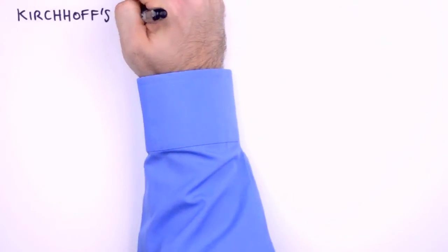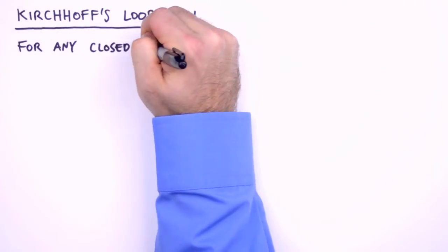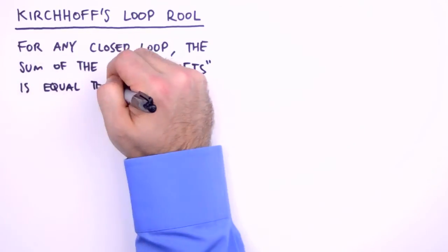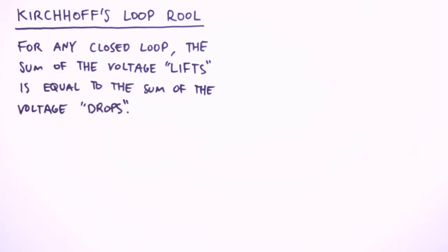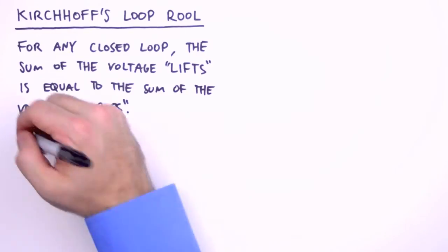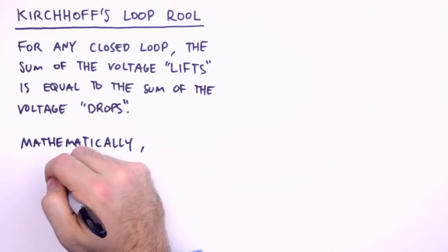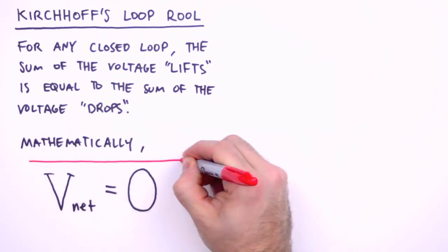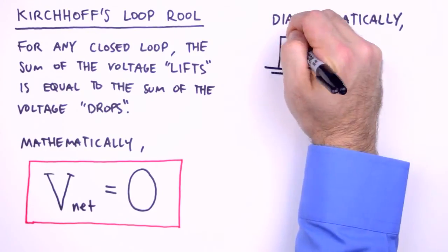Now let's examine Kirchhoff's other rule: the loop rule. The loop rule states that for any closed loop, the sum of the voltage lifts is equal to the sum of the voltage drops. A closed loop is any continuous path in the circuit that ends where it started. Stated mathematically: the net voltage for a closed loop equals zero. Let's look at a simple circuit to see how we apply the loop rule.